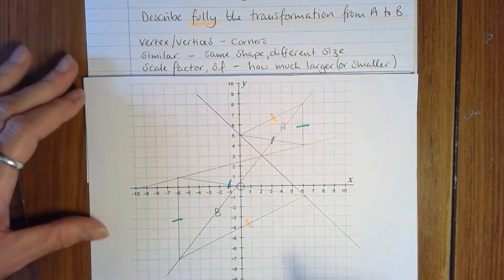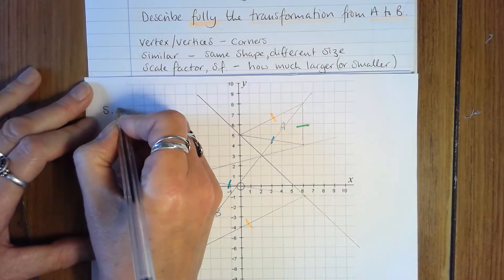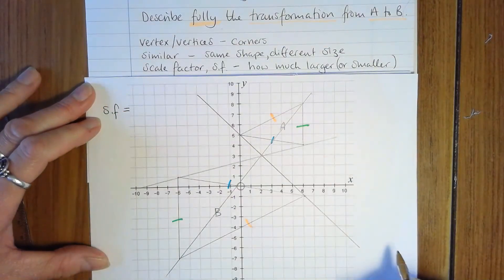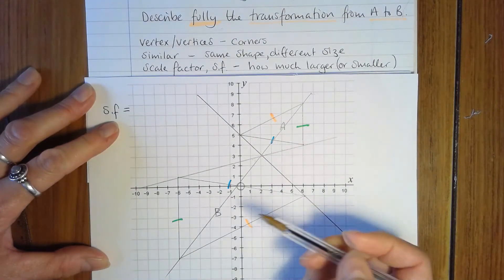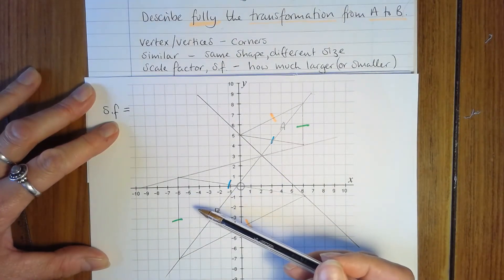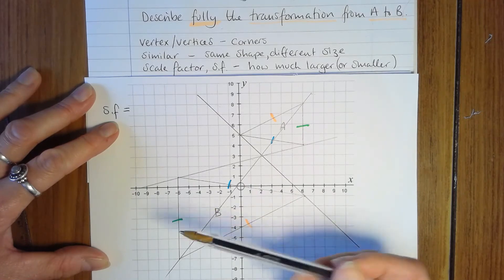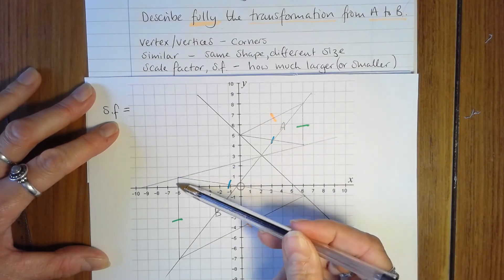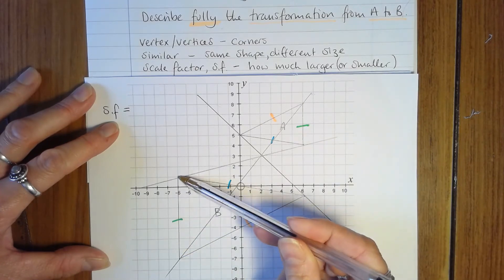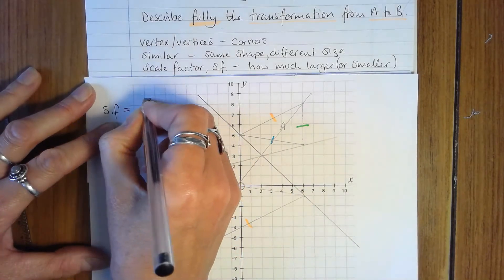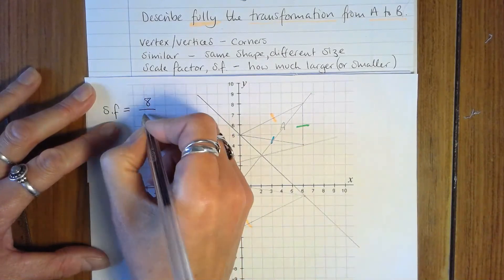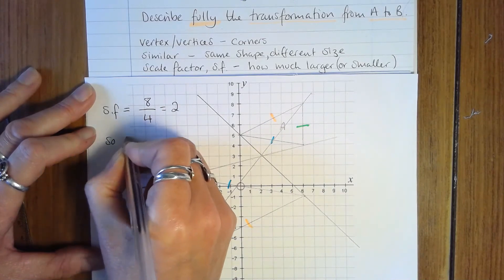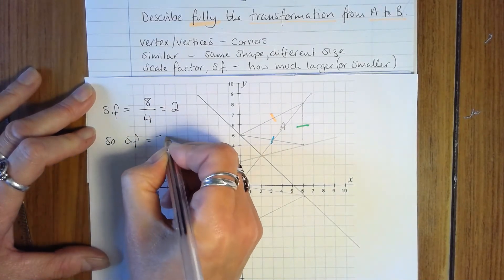So the next thing to do is find the scale factor of enlargement. Now we know it's going to be a negative scale factor, but I'm just going to find the size or magnitude of the scale factor by using this division. So we just divide the length of one of the sides on the new shape by one of the sides on the original shape, and the easiest one to use is this one because I can count the squares. This side here is 8 squares long and this side here is 4 squares long, and that gives me a magnitude of 2. So scale factor equals negative 2.